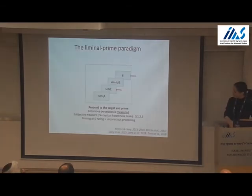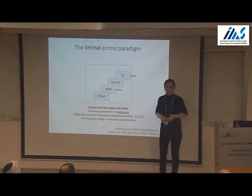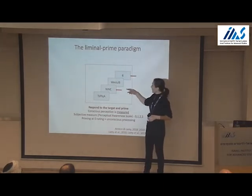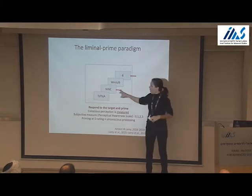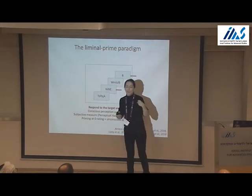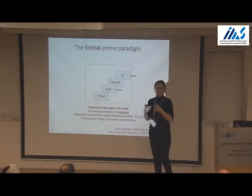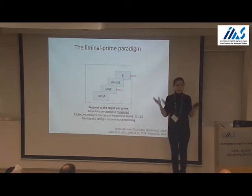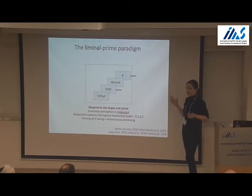In recent years, a number of labs have been using a different paradigm — a modification of the standard paradigm — which we call the liminal prime paradigm, which attempts to solve these problems. In the liminal prime paradigm, we have a very similar sequence of events, except that on each trial, subjects first have to respond as fast as possible to the target, but then they have to rate the visibility of the prime on a scale from 0 to 3. This is a modification of the perceptual awareness scale by Overgaard. Zero means I don't see anything; one means I have a glimpse that something was happening but couldn't say anything about it; two is almost clear vision; and three is a clear vision of what the prime was.